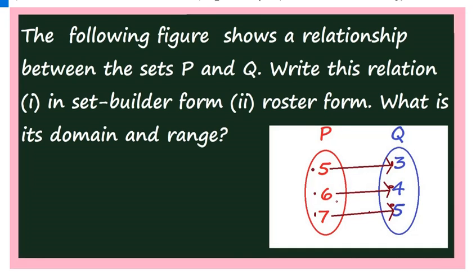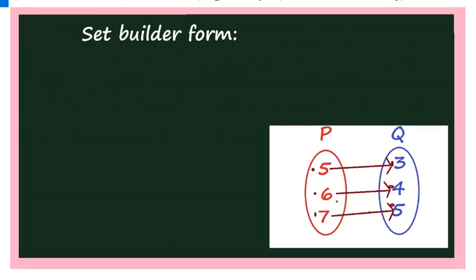See the figure. The figure is just a mapping given in a diagram, and this is a very simple question. The only thing is representation — how to represent this. Let us write the solution. The first part is in set builder form. To write in set builder form, you have to express in terms of an equation. First, you have to take the sets P and Q.